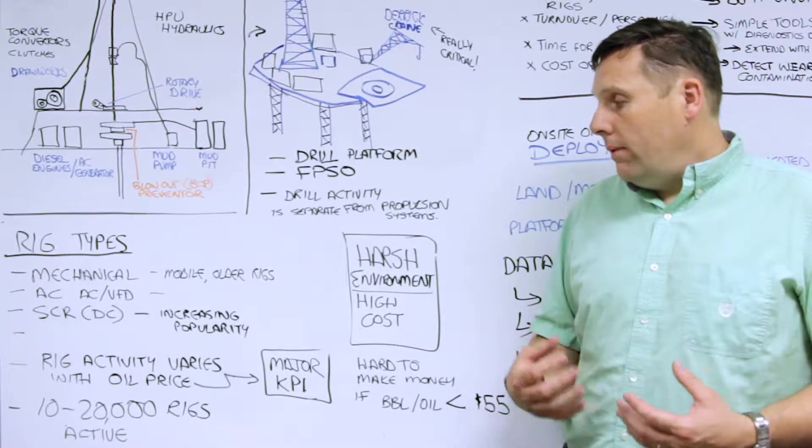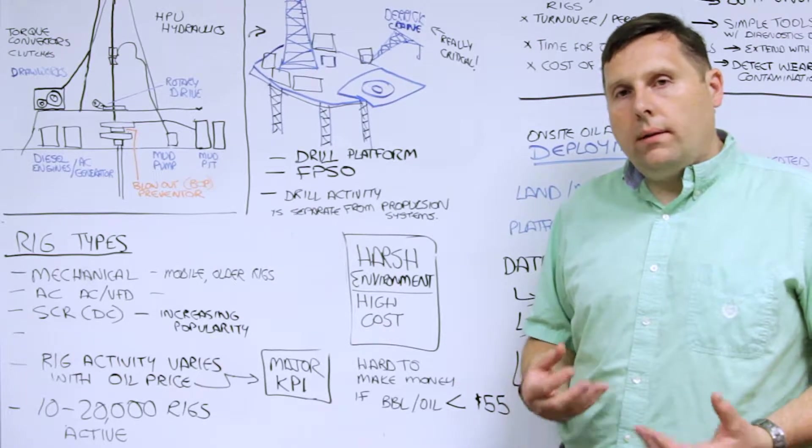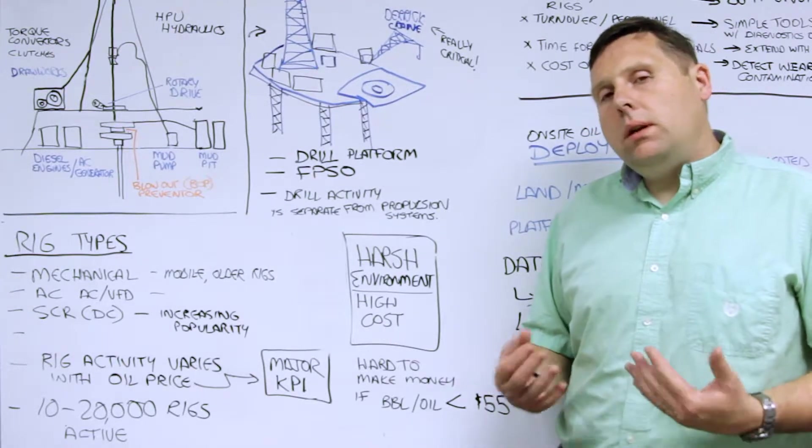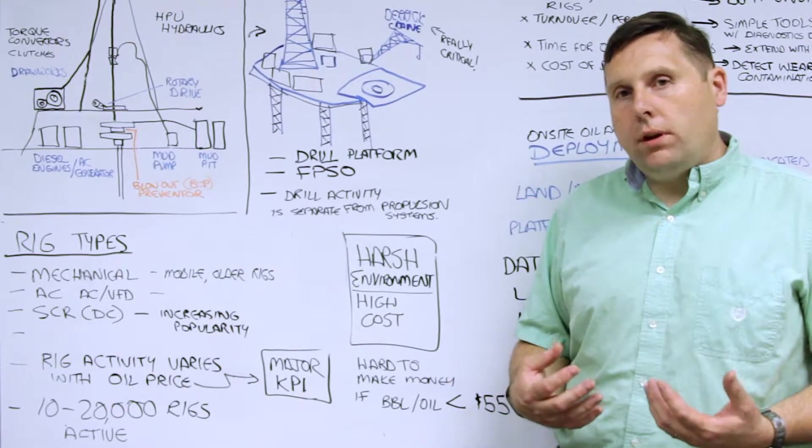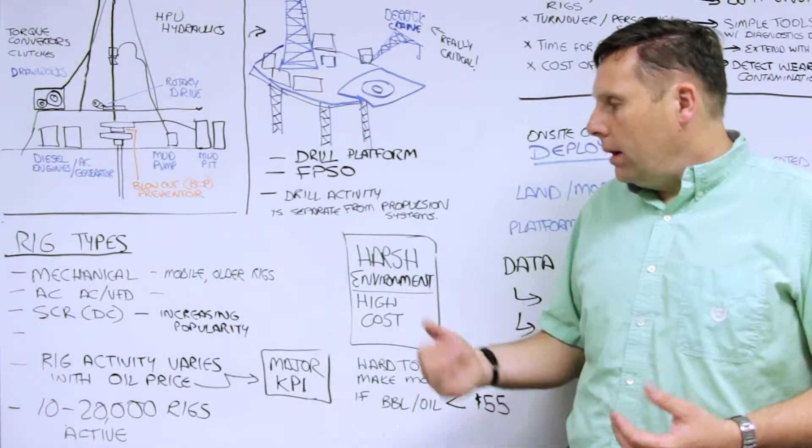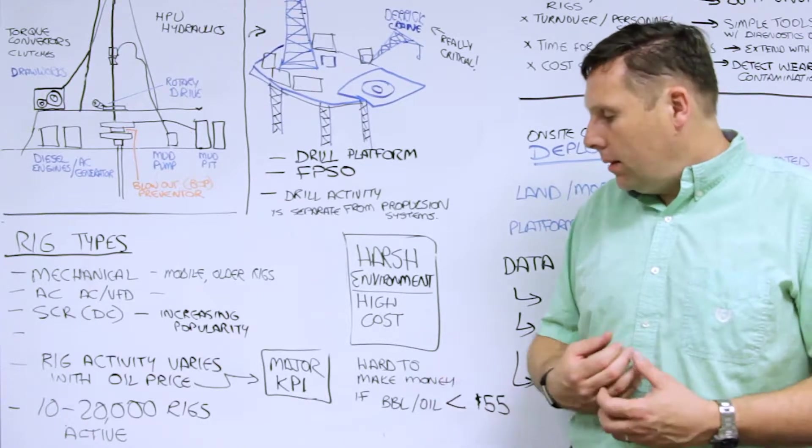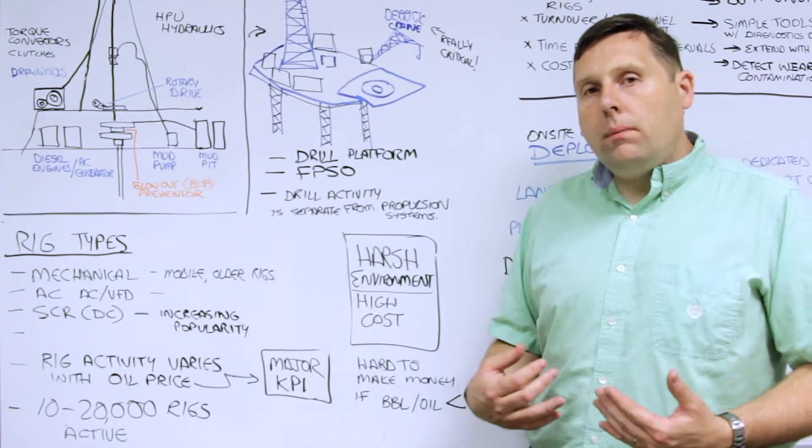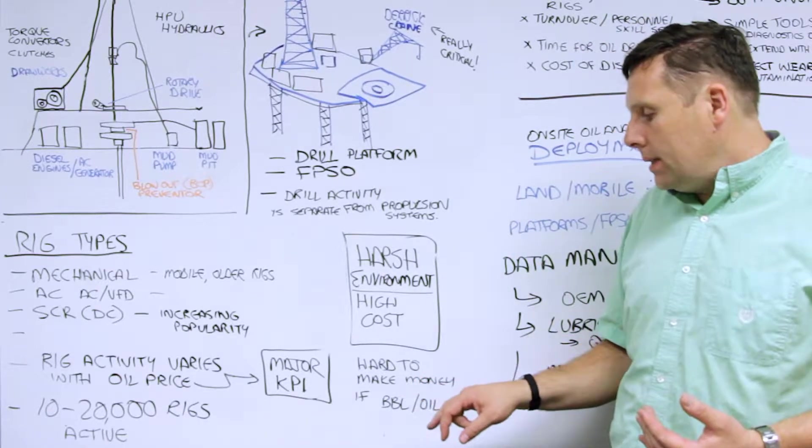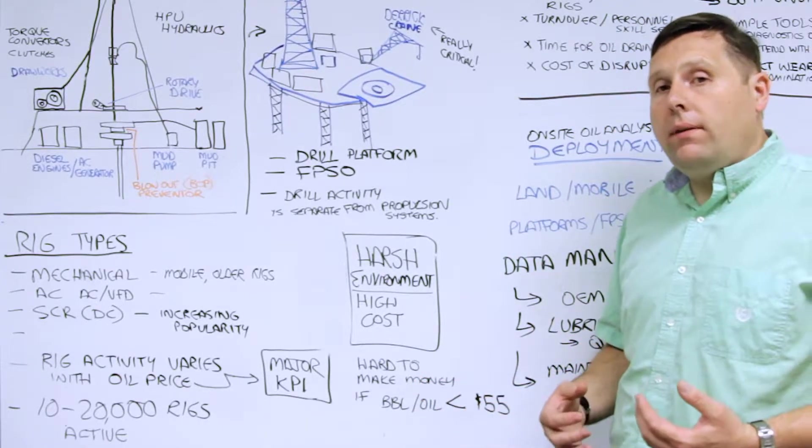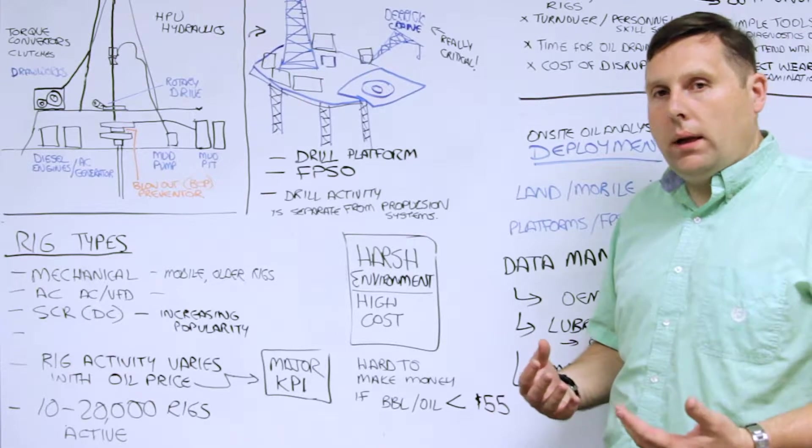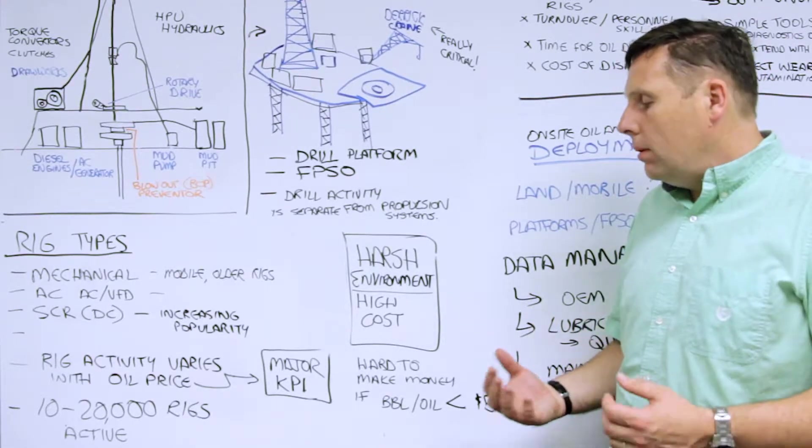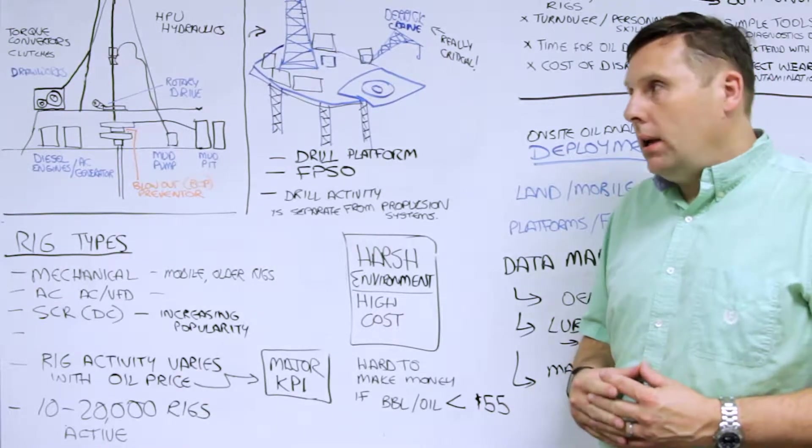Rig activity varies according to oil price. At any one time there's probably 10,000 to 20,000 rigs worldwide in operation, both land and offshore. These are very harsh environments with high cost. Your primary KPI, the oil price, has to be at least $55 or more in order to make money. Some industries in some parts of the world can do less than that, but most of the time they need to be able to do that to make money.